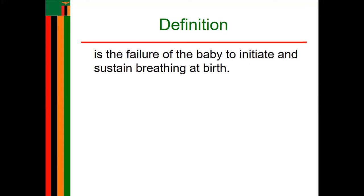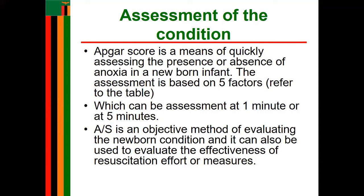When it comes to assessing neonatal asphyxia, you use the APGAR score, which is a means of assessing the presence or absence of anoxia — meaning lack of oxygen — in a newborn infant. This assessment is based on five factors: pulse in terms of heart rate, respiratory rate, muscle tone, grimace, and appearance.